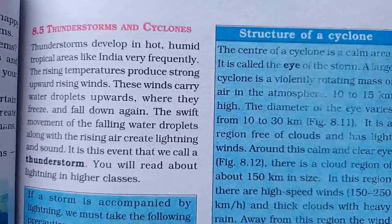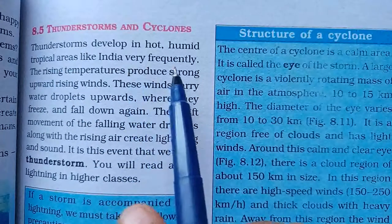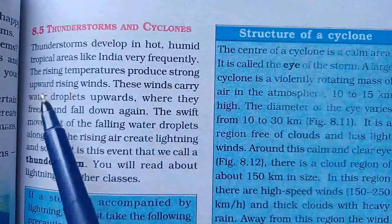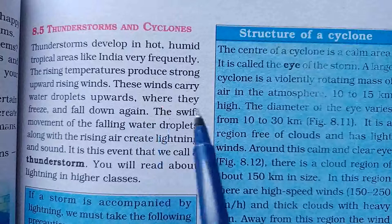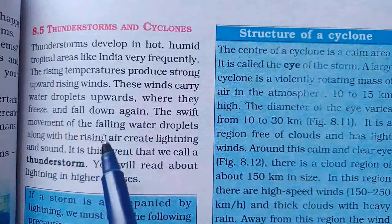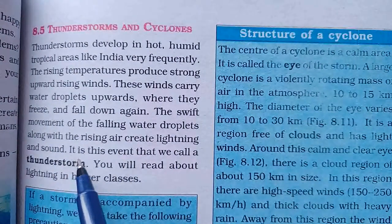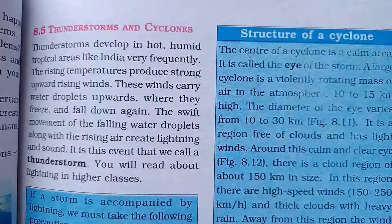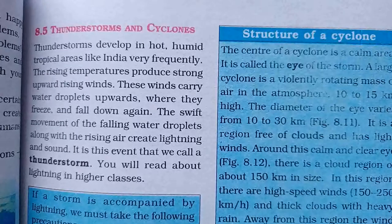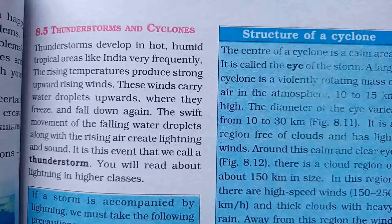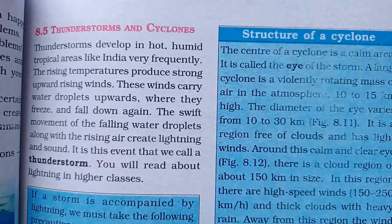What is a thunderstorm? Thunderstorms develop in hot, humid tropical areas like India very frequently. The rising temperatures produce strong upward rising winds. These winds carry water droplets upward where they freeze and fall down again. The swift movement of the falling water droplets along with the rising air creates lightning and sound. It is this event that we call a thunderstorm.